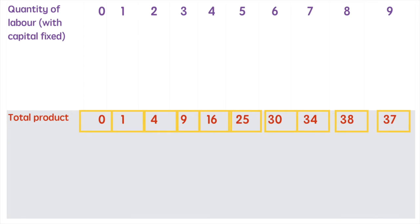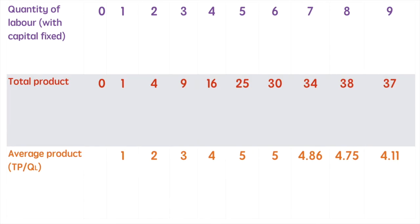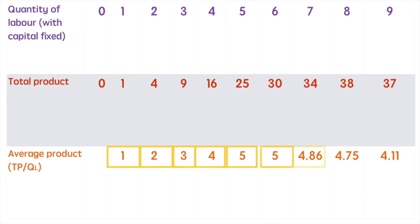Next we take a look at the average product at each quantity of labour. Our first worker's total product is 1, and dividing that by 1 gives us an average product of 1. Two workers produce 4 units which results in an average product of 2 — we divide 4 units by the 2 workers and each worker produces an average of 2 units. Continuing this down to the 9th worker, we see that 9 workers contribute an average of 4.11 units. This is interesting because up until our 6th worker, our average output is about 5 units per worker. It's now decreasing and we'll have to explain why.